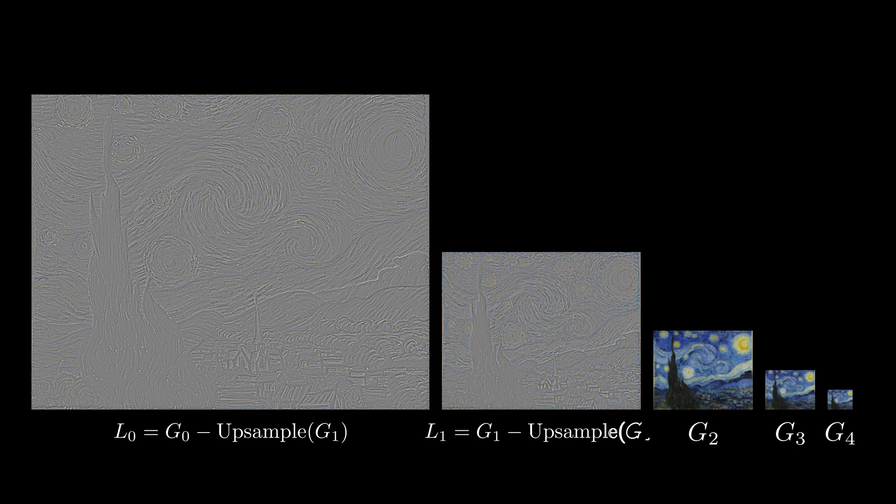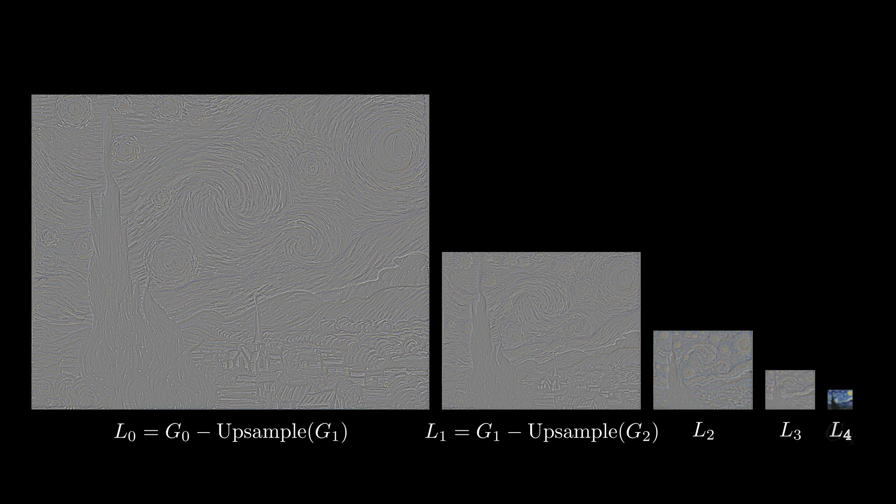Similarly, we compute L1 as the difference between the image G1 and the upsampled G2. This captures the high-frequency details present in G1 but not in G2. Following the same process, this forms the Laplacian pyramid.